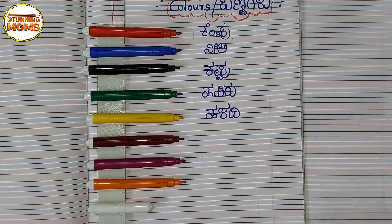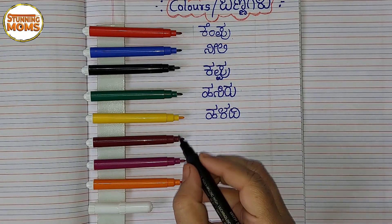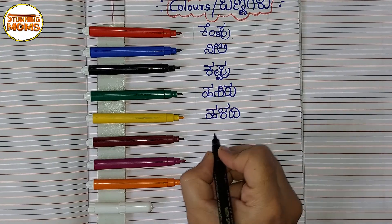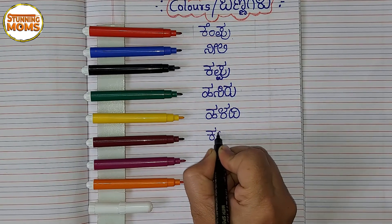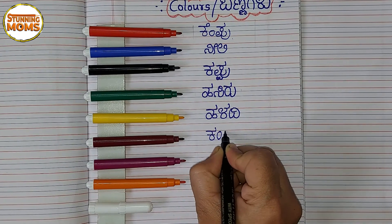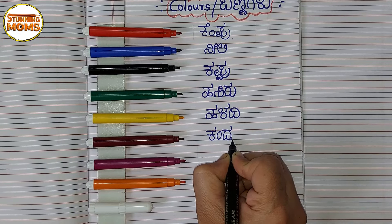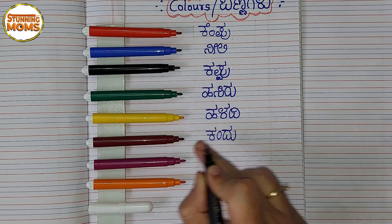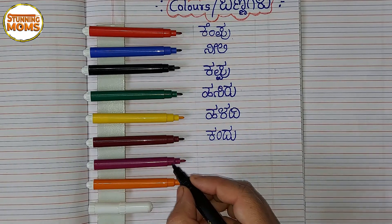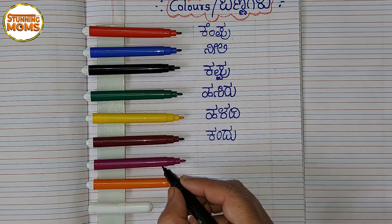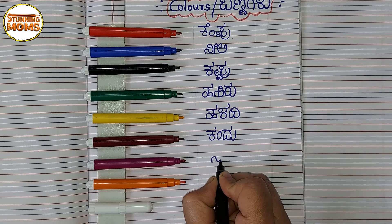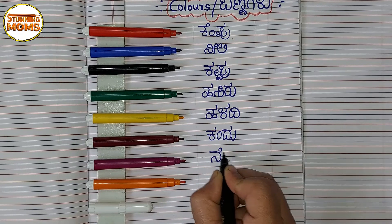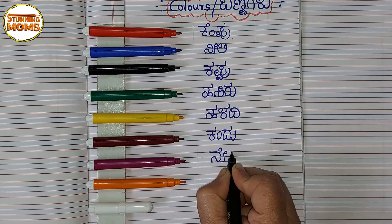Haladi banna. Kandu banna. Brown color — kandu banna. Purple color — nerele banna.